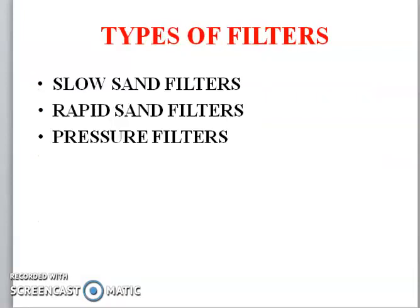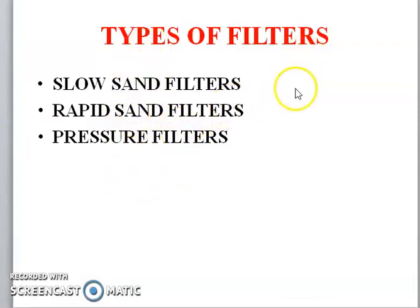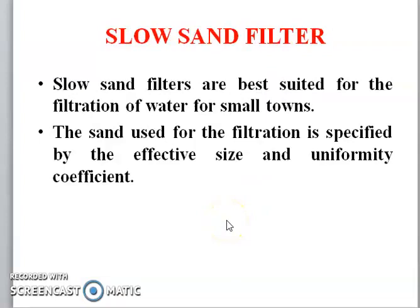Types of filters: slow sand filters, rapid sand filter, and pressure filter — these 3 types of filters are used for filtration purposes nowadays. Slow sand filters are best suited for filtration of water for small communities.